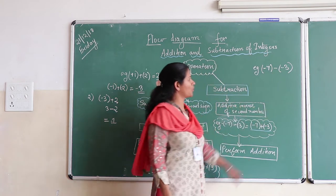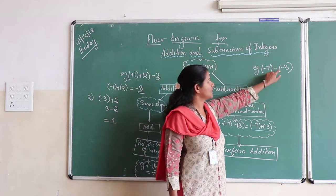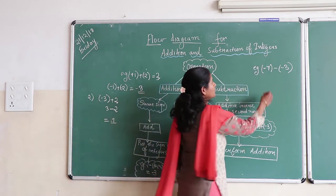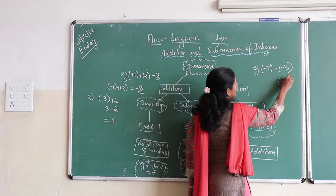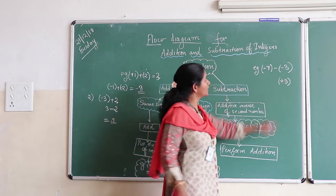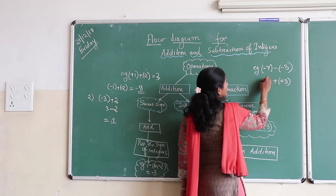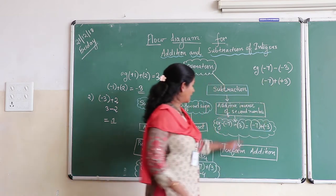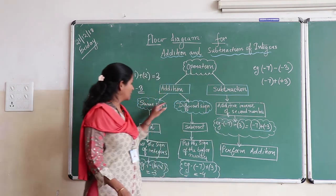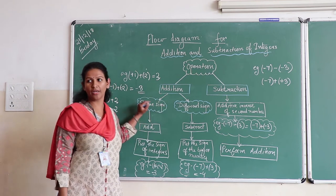If I want to perform subtraction of two integers, I will take additive inverse of the second number. The additive inverse of minus 3 will be plus 3. We will convert this minus sign into plus and then we will move to the flowchart for addition.